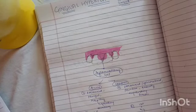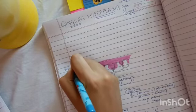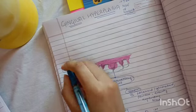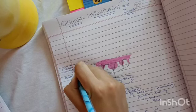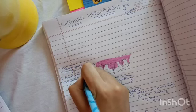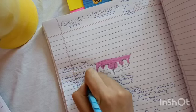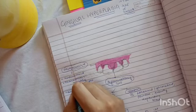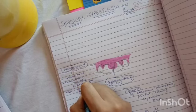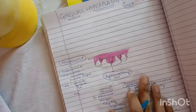Another cause is idiopathic gingival hyperplasia, where we do not know why it is happening — the cause is undetermined. You will see a characteristic minutely pebbled surface. It affects the attached gingiva, interdental papilla, plus marginal gingiva. It is painless and has almost a leathery consistency.